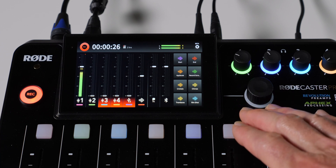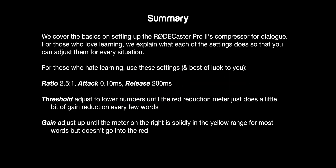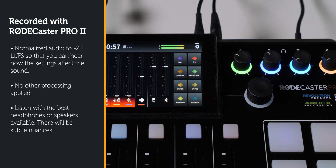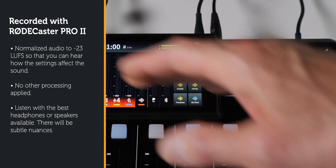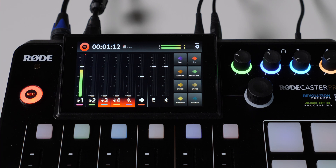In this episode, we're going to talk about setting the compressor on the Rodecaster Pro 2. First, why do you want to use a compressor? The answer is that you use a compressor to help even out people's voices, and oftentimes what that allows you to do is boost up their levels just a little bit, so you can get good, consistent, loud audio.